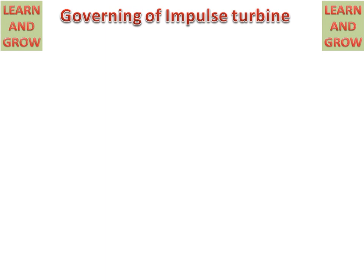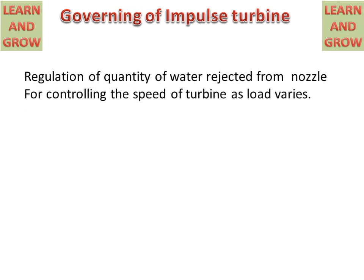Today we will discuss about governing of impulse turbine, or combined governing with the help of spear and deflector. Governing is the regulation of quantity of water ejected from the nozzle for controlling the speed of the turbine according to load changes. Firstly, we will discuss about the parts of the governing of impulse turbine.